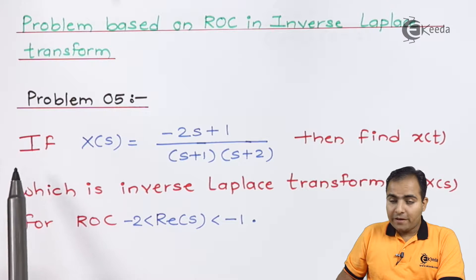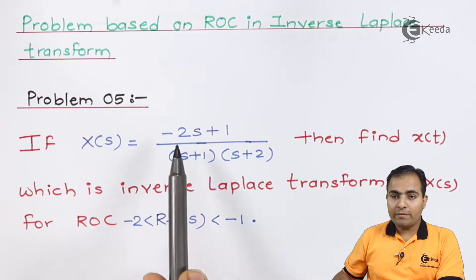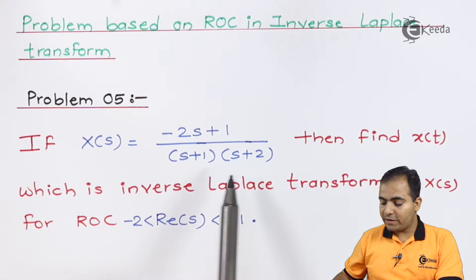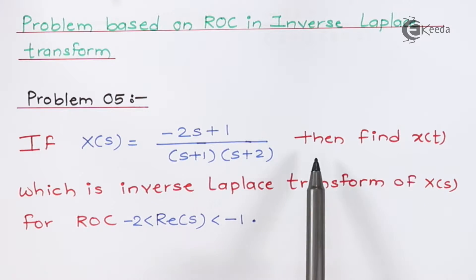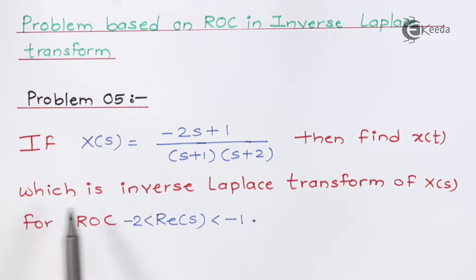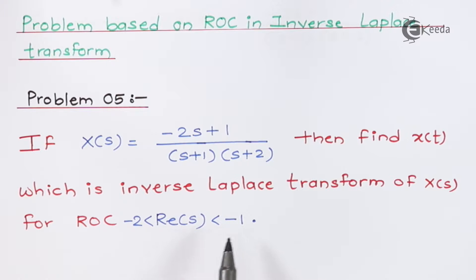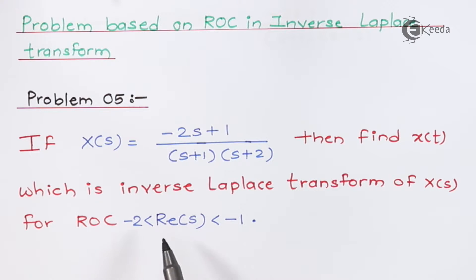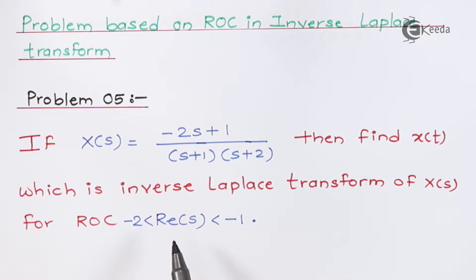Problem number five: X(s) is given as (-2s + 1) in the numerator and (s+1)(s+2) in the denominator. Find x(t), the inverse Laplace transform of X(s), for the ROC lying between minus two and minus one. This ROC is two-sided. We have solved various numericals previously with two-sided ROC, so go through those before solving this question.